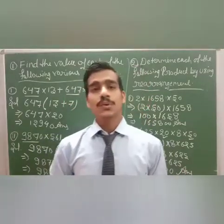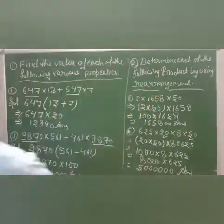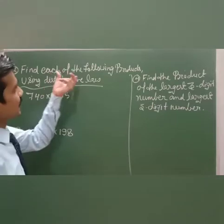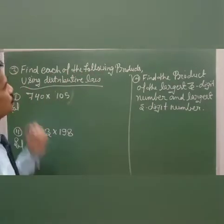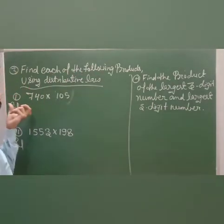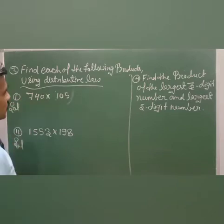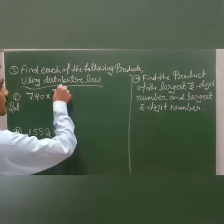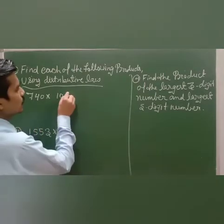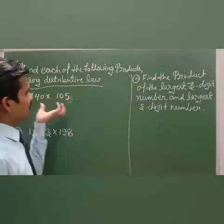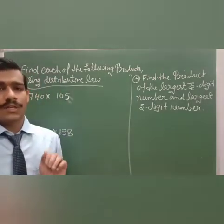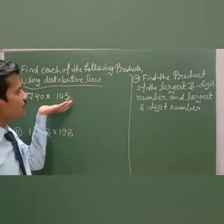Now I am going to start question number 3: Find each of the following products using the Distributive Law. First question: 740 into 105. To use the distributive law, you will break 105 as 100 plus 5.